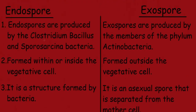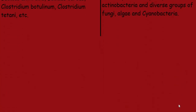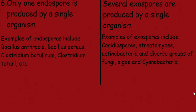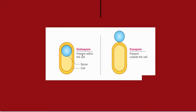These were the differences between endospore and exospore. Here is a diagram for clarity: endospore is present within the cell, and exospore is present outside the cell. This blue structure is known as the spore, and this is the cell.